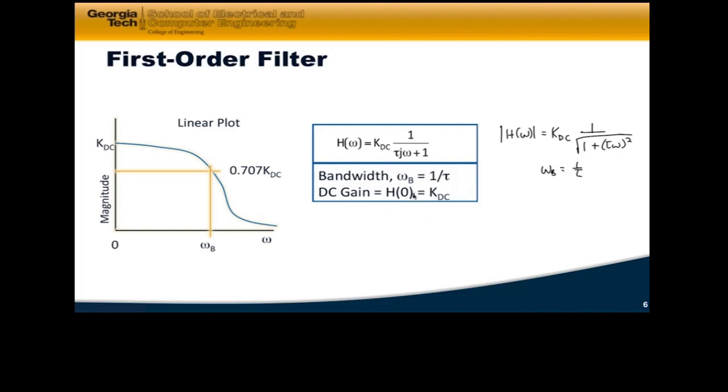Now the DC gain is the value of H of omega when I let omega equal to 0. Because I want to emphasize again, that's the DC is at omega equals 0. So that's just a generic first order filter.